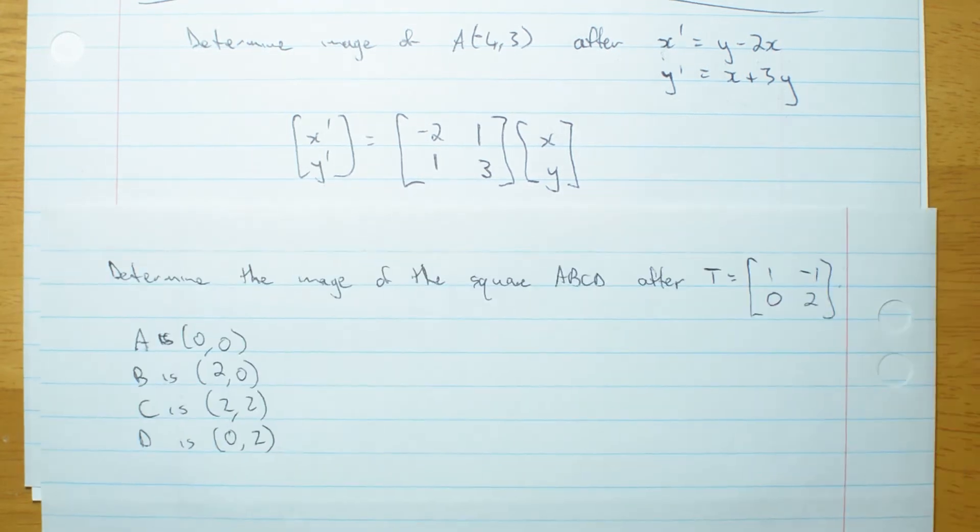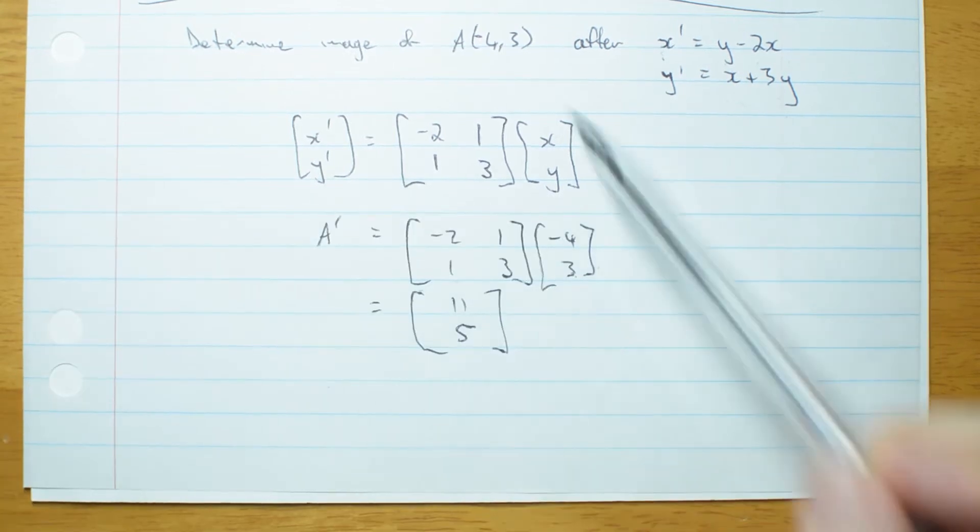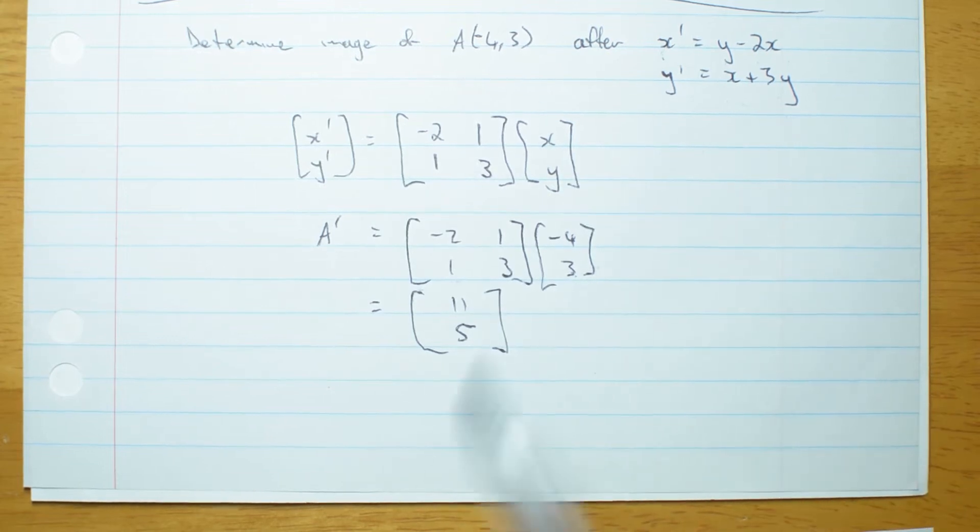Now suppose I have to do the same thing for more than one point. Obviously I could just do this 4 times, but there is a quicker way. There's a way to write less and if you're using technology to do it you could actually do it in less time. Let me show you.